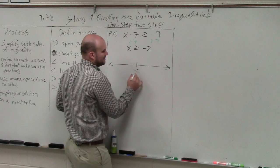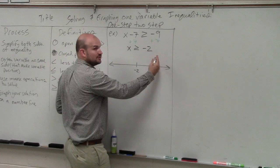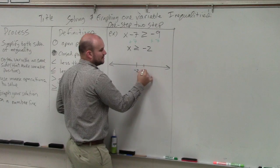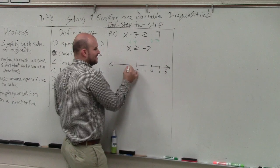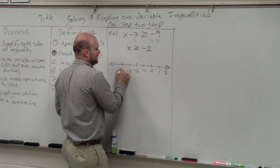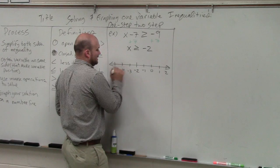So this would be negative 2. Values to the right are going to be more positive, like negative 1, 0, 1, and 2. And numbers to the left are going to be smaller, like negative 3, negative 4, and negative 5.